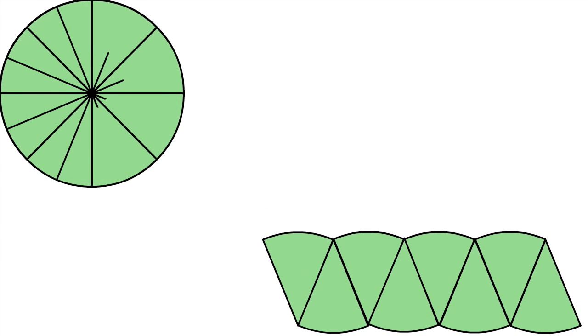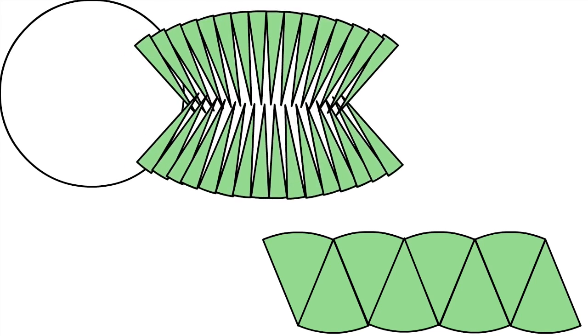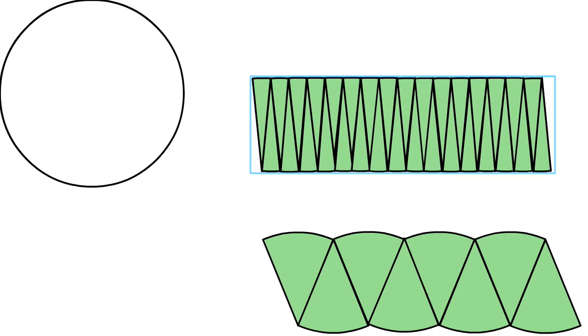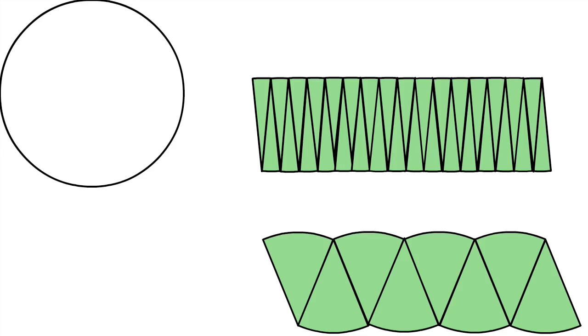So next we will divide the circle into small equal pieces and we will arrange them in the same manner. You can see that it appears more like a rectangle.